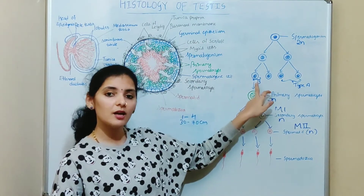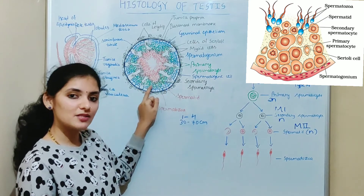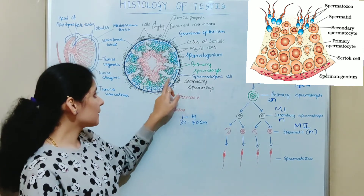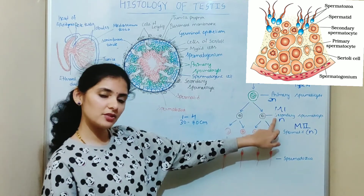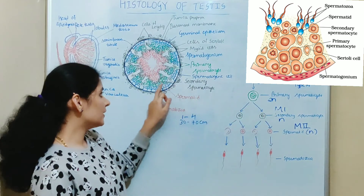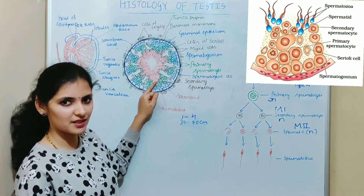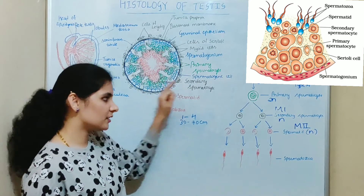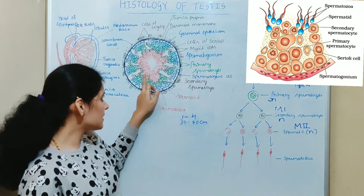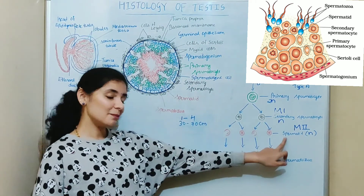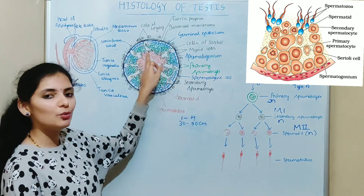Type B spermatogonia produce primary spermatocytes, which are present just below the spermatogonia. The primary spermatocyte is a large cell with a large nucleus. It undergoes the first meiotic division — a reductional division — reducing the number of chromosomes, and produces secondary spermatocytes. Secondary spermatocytes are smaller in size and present just below the primary spermatocytes. These secondary spermatocytes undergo the second meiotic division and produce spermatids. The spermatids are present near the lumen, and they undergo a process called spermiogenesis to produce spermatozoa, which are present near the lumen of the seminiferous tubule.